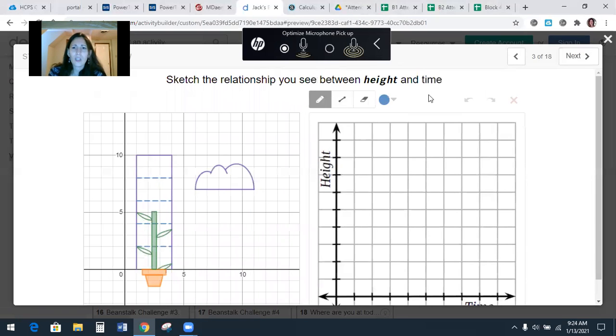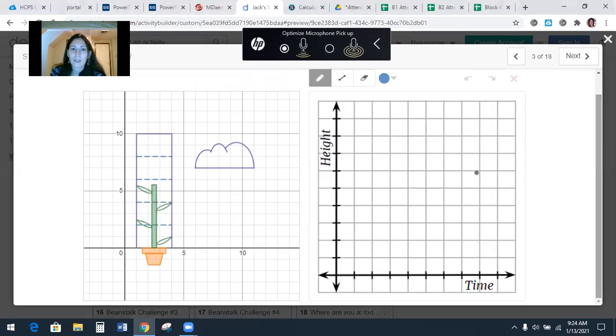All right. So what we're going to do here is graph. I have too many things on my screen here. I'm trying to make this smaller. We're going to graph the relationship between height and time. So time is down here on the x-axis. And then what's going on with height? So what is this graph going to look like? As time goes by, what's happening to the height?